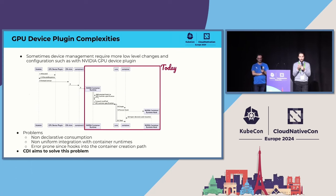How does GKE support time slicing? It uses the same mechanism as the NVIDIA GPU device plugin — you specify how many clients can use the GPU at a time, the device plugin advertises that count, and workloads are scheduled accordingly. There's nothing special done on GKE versus the standard NVIDIA device plugin; the underlying mechanism is the same.